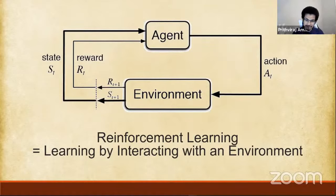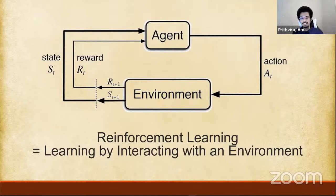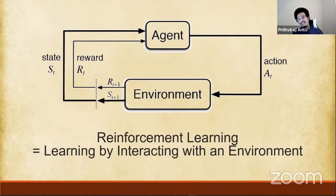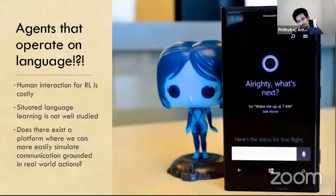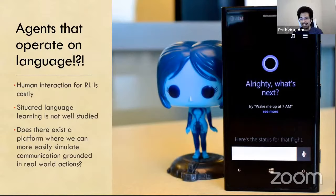This seems to check all the boxes for the key components we talked about. So why haven't people put two and two together? Why don't we see a bunch of reinforcement learning agents operating on language? To understand that, let's take a look at an example of an agent that operates on language in action.